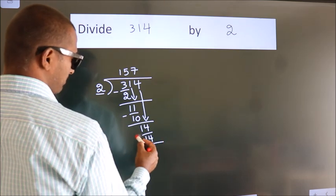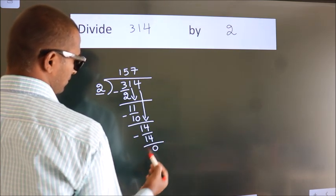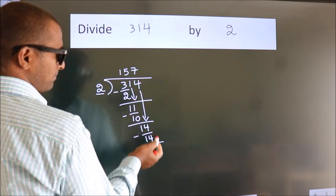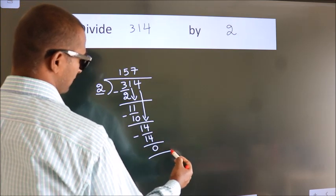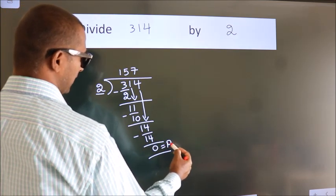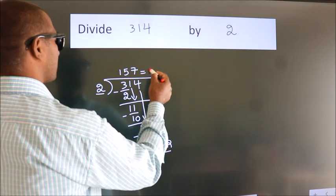Now, we subtract. We get 0. No more numbers to bring down. So, we stop here. This is our remainder. This is our quotient.